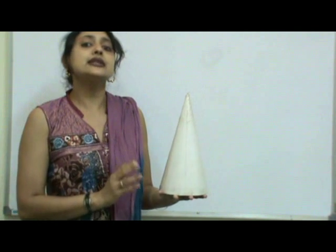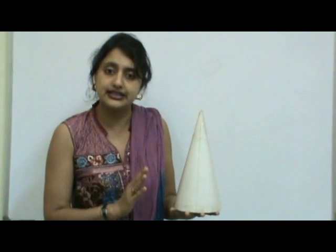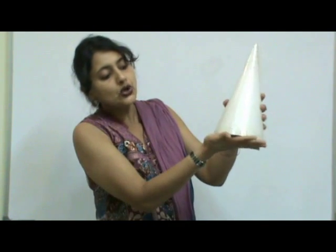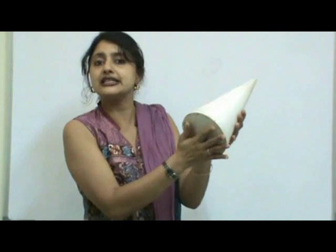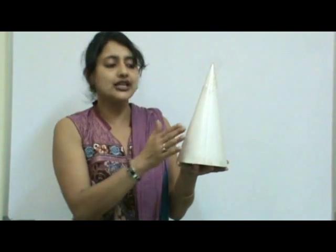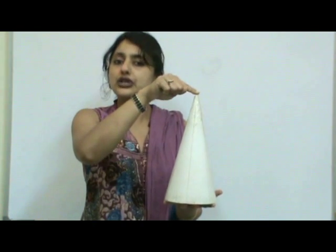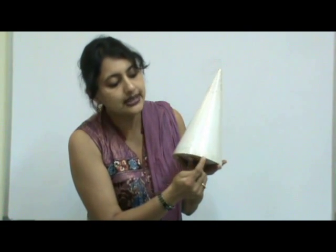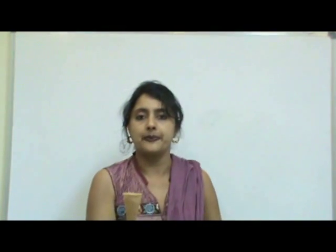Now we move on to three-dimensional figures that have both a curved surface and a plane surface. This is a cone. The bottom side has a flat, plane surface, while the round side is called the curved surface. So a cone has two faces — one curved and one plane. The pointed top is the vertex, and where the two faces meet at the rim is the edge. Frequently used examples are the birthday cap and the ice cream cone.